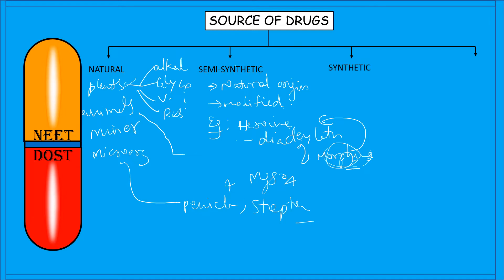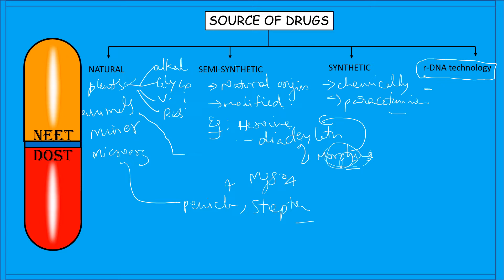Synthetic drugs are obtained completely by chemical synthesis. Best examples are paracetamol, aspirin, and colchicine. The last source category is recombinant DNA (rDNA) technology, where drugs are obtained by changing the amino acid sequence of a gene inserted into a plasmid, and the desired product is obtained by culturing. Examples include human insulin, human growth hormone, and hepatitis B vaccine.